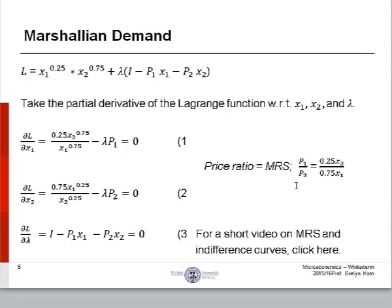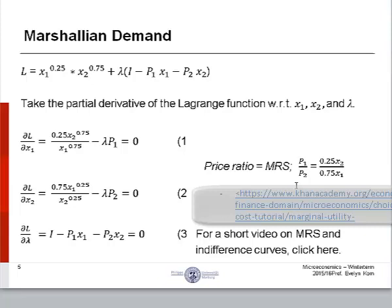The marginal rate of substitution, conceptually, is a unit amount of good 1 that an individual will substitute for an additional unit of good 2 while staying on the same indifference curve. Graphically, it is represented by all the points along the indifference curve. The link provided will direct you to a short video reviewing the relationship between marginal rate of substitution and the indifference curve.